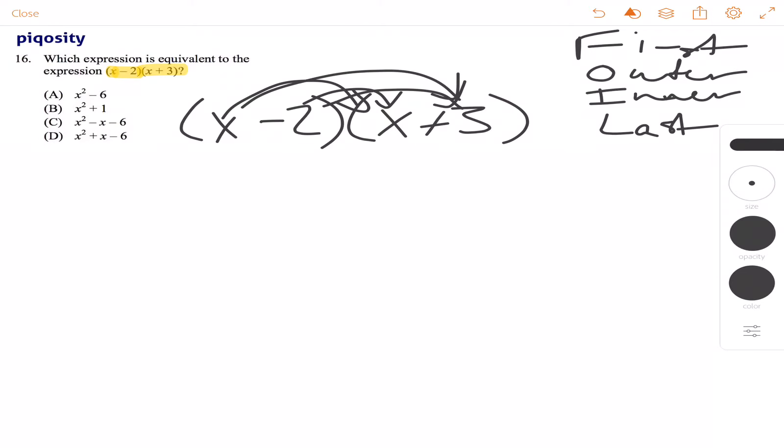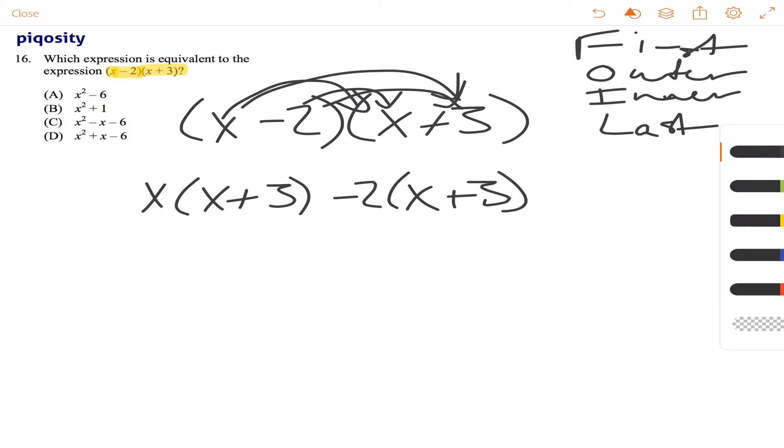You can also write this out as x(x + 3) - 2(x + 3). So taking each part of the first one and multiplying it to the same equation each time. For me it's easier to do it like this so I make sure that I'm doing everything right.